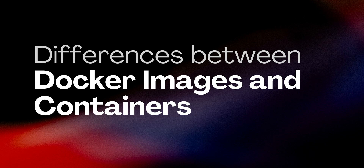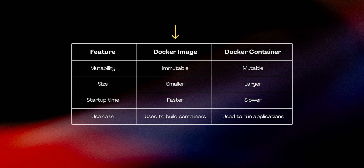Let's clarify the differences between Docker images and containers. Docker images are immutable, meaning they don't change once they're created. They're smaller and faster, used as blueprints for building containers. Docker containers, on the other hand, are mutable. They're larger and can be slower, but this is where your applications run. Containers add a writable layer to the image, allowing the application to interact with users and other services.